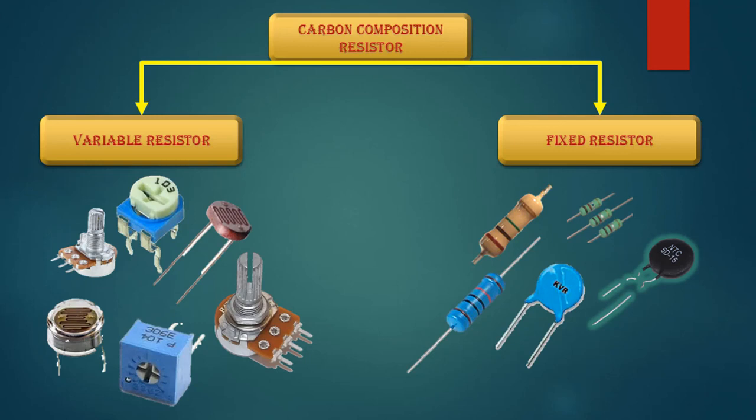Some variable resistors change their value with a change in voltage. Some change their value due to a change in current. Some change their value due to the effect of light on them, while some are changed mechanically.